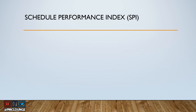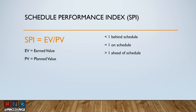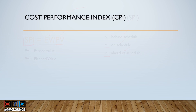Schedule Performance Index, or SPI: SPI equals EV divided by PV, where EV is the Earned Value and PV is the Planned Value. If the answer is less than one, you are behind schedule. If it equals one, you are on schedule. If it is greater than one, you are ahead of schedule — great news.